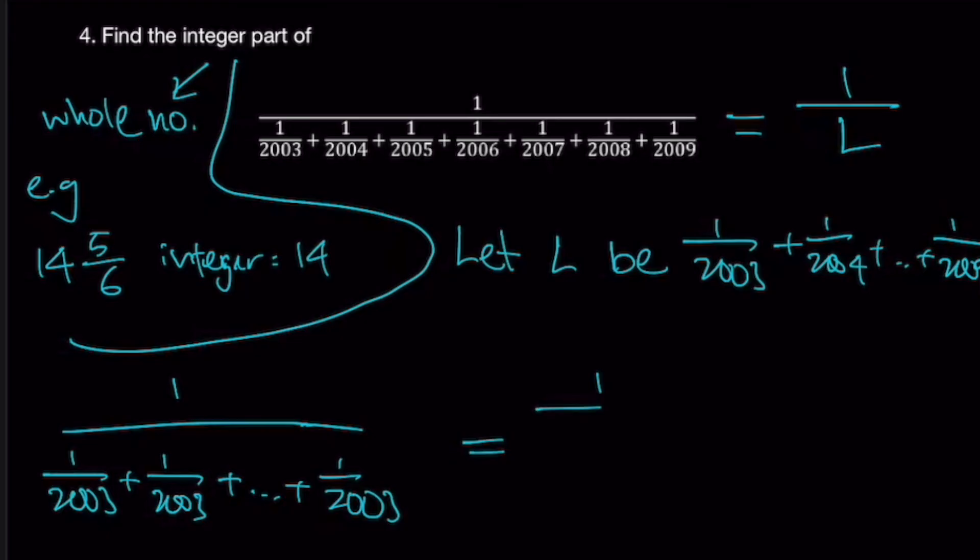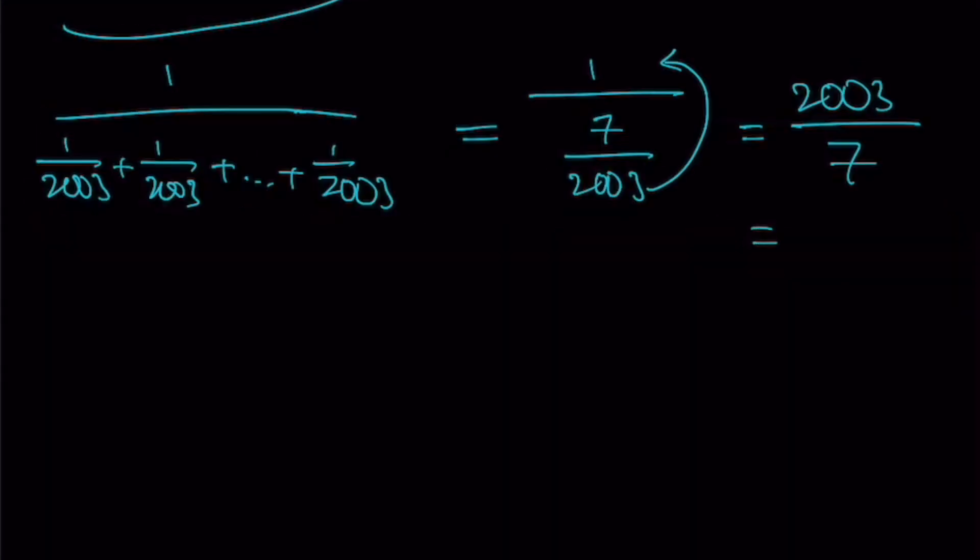1 over 2003 plus 1 over 2003 plus 7 times 2003. You'll get 1 over 7 over 2003. And for those who are familiar with this fraction, you'll realize that you can actually flip the bottom fraction up. You'll get 2003 over 7. And to find a mixed number, you'll get 286 1 over 7. Okay, so that is one end.